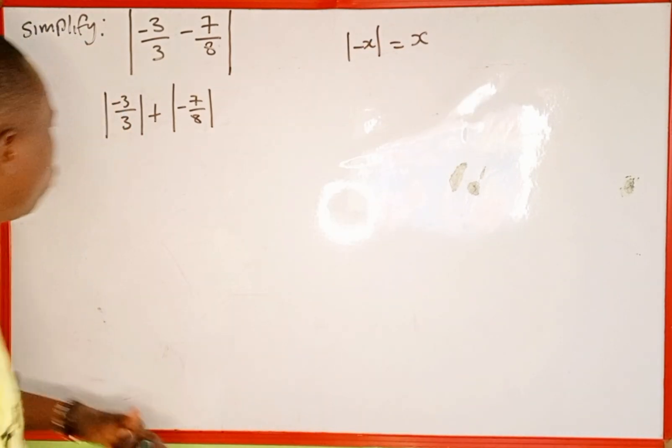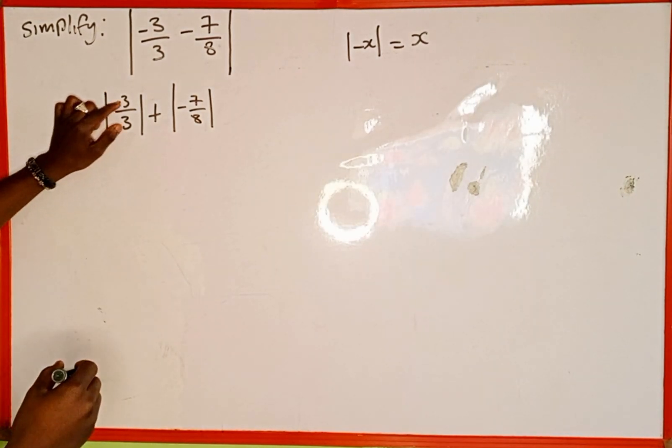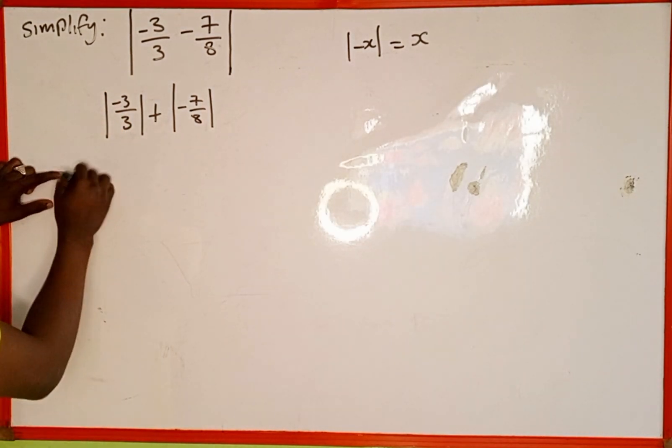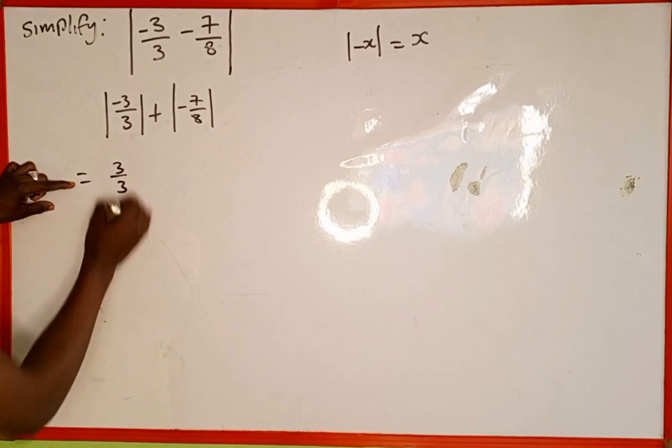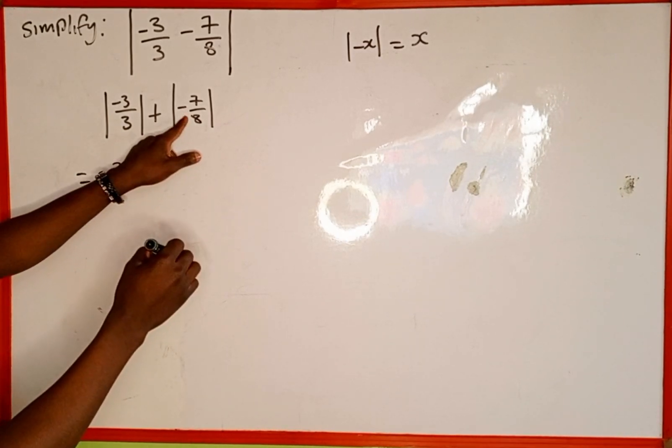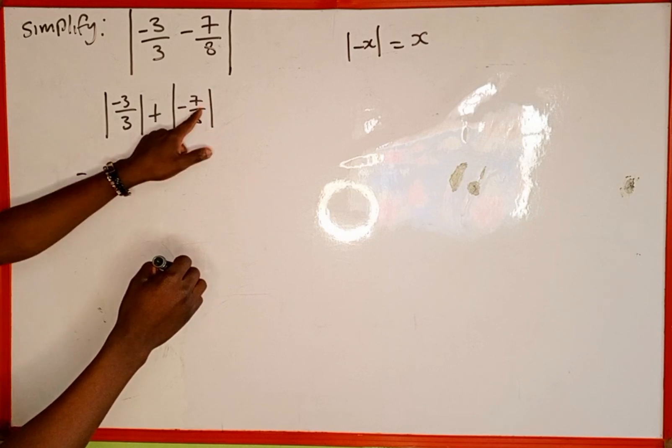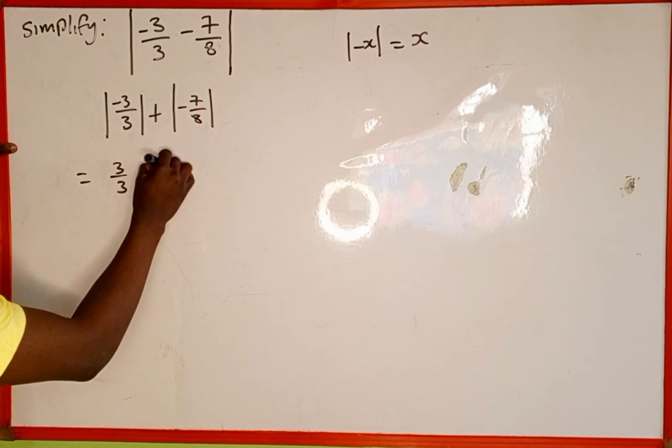So therefore, absolute value of negative 3 over 3 is the same as positive 3 over 3, then plus absolute value of negative 7 over 8 is the same as 7 over 8.